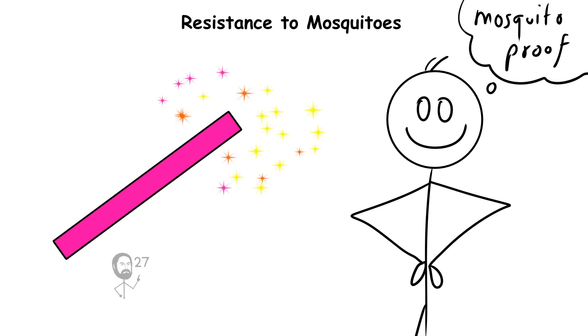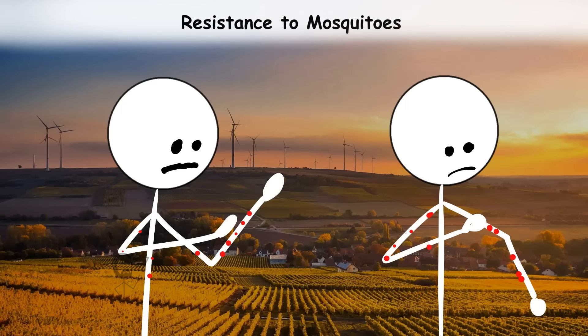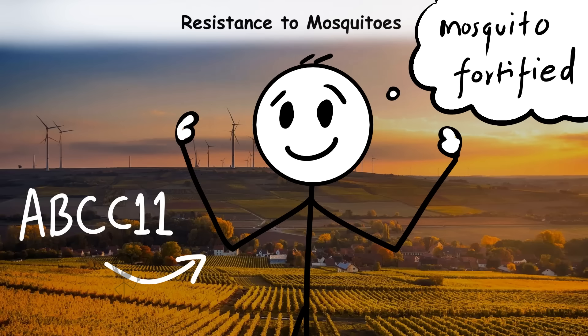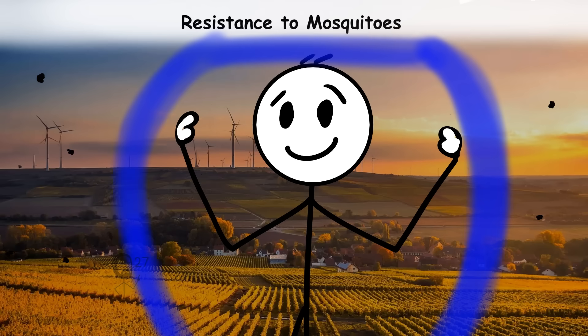The effect is striking in real life. While others are covered in itchy welts during summer evenings, people with this trait often remain untouched, as if surrounded by an invisible shield.